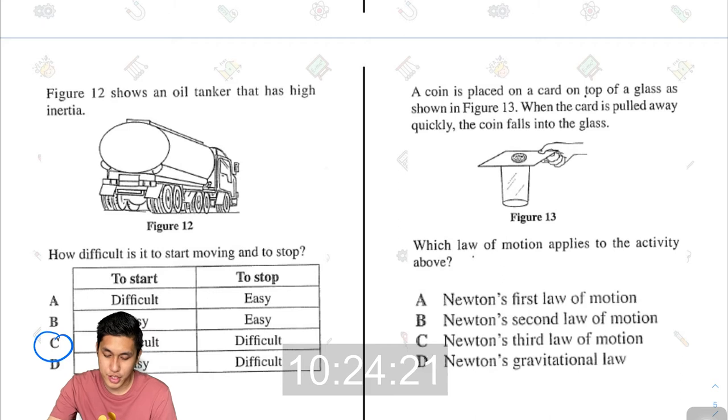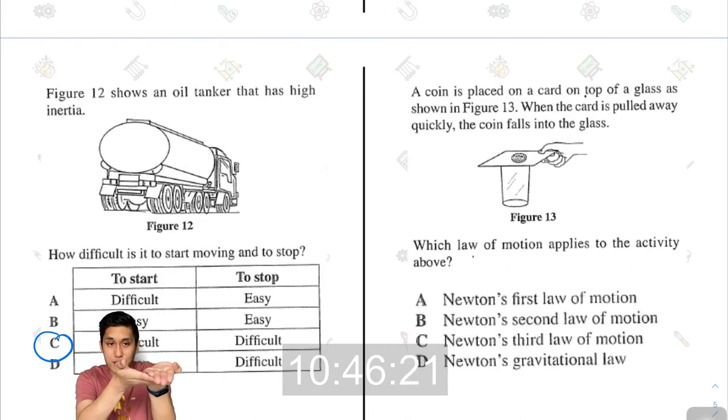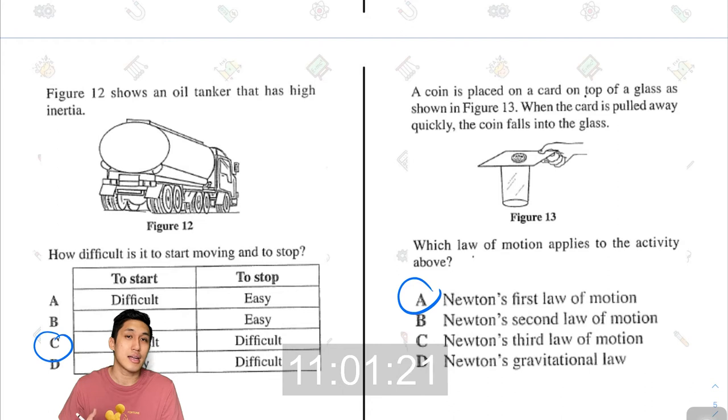A coin is placed on a card on top of a glass as shown in figure 13. When the card is pulled away quickly, the coin falls into the glass. Which law of motion applies to the activity above? When you pull the paper, the coin does not want to follow the paper because the coin itself has inertia. The coin wants to remain stationary. And so it will remain there instead of following the card. And the reason it falls is because of gravity. This would be Newton's first law of motion. Whereby anything that is stationary would want to remain stationary, anything that is moving at constant velocity will want to remain at constant velocity until acted upon by an external force.